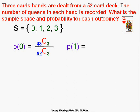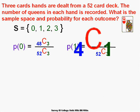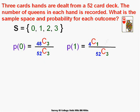The probability of getting exactly one queen uses the multiplication principle. The sample space is still C(52,3). To produce one queen: that's C(4,1) — one queen chosen from four — multiplied by C(48,2), the number of ways to choose the other two non-queen cards from the 48 remaining. So we have one queen and two non-queens.